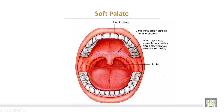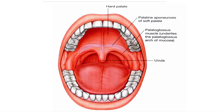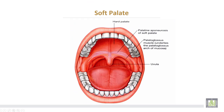This is the soft palate. Posteriorly there is the uvula of the soft palate. It has two folds, each containing one muscle: the palatoglossal fold containing the palatoglossus muscle, and the palatopharyngeal fold containing the palatopharyngeus muscle.